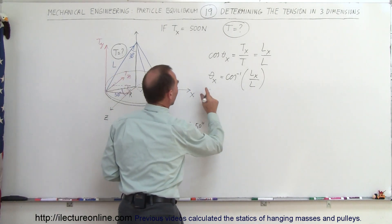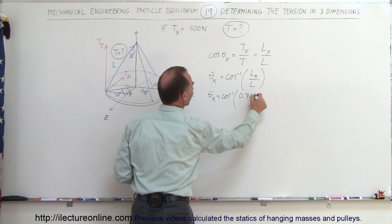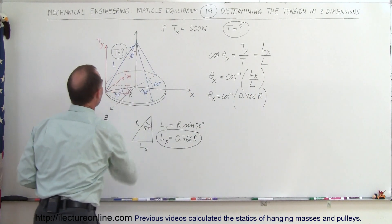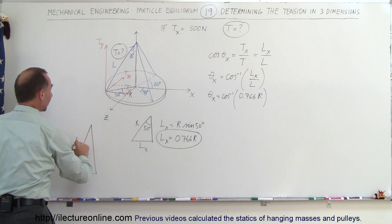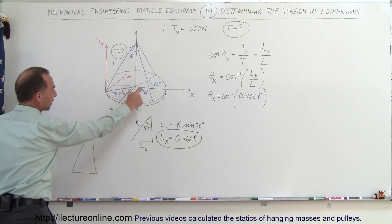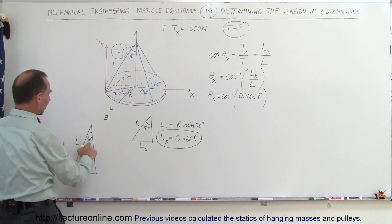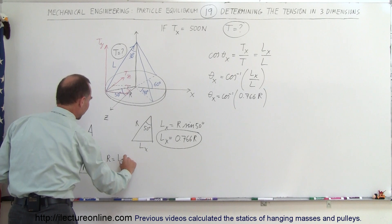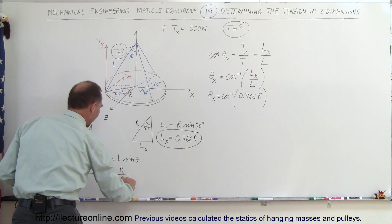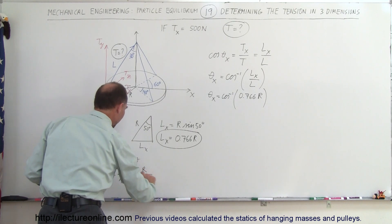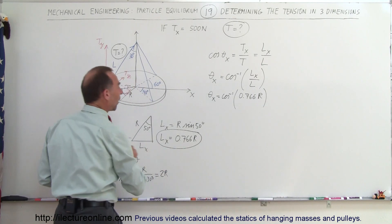To find theta sub x, we take arccos of L sub x divided by L, which is arccos of 0.766R divided by L. For this we need another triangle where the hypotenuse is L, the angle is 30 degrees, and the opposite side is the radius R. Since R is opposite to the angle, R equals L times sine of 30 degrees, so L equals R divided by sine of 30 degrees. Since sine of 30 degrees equals one half, L equals 2R — the length is twice the radius.